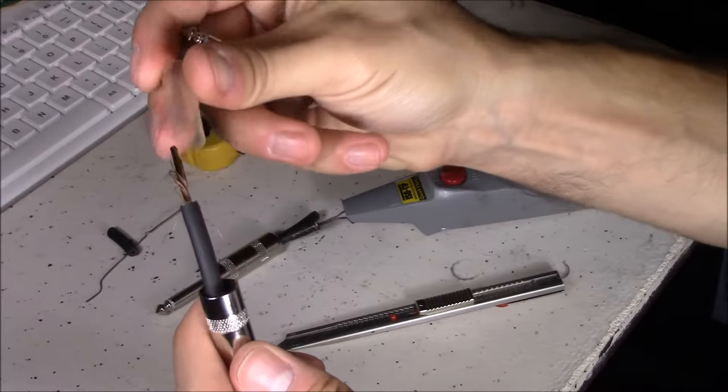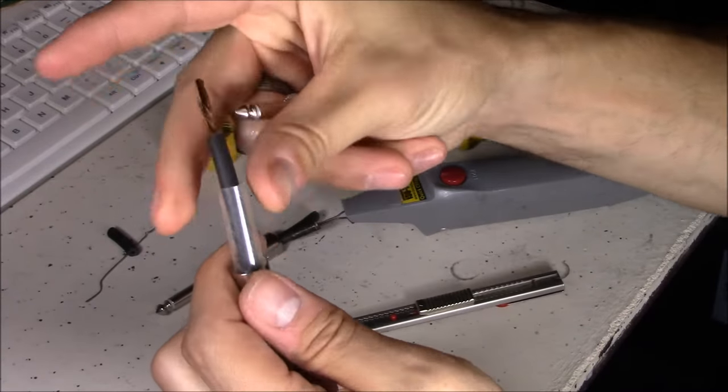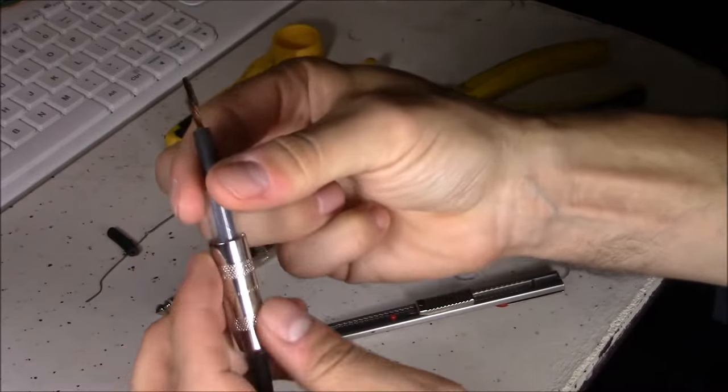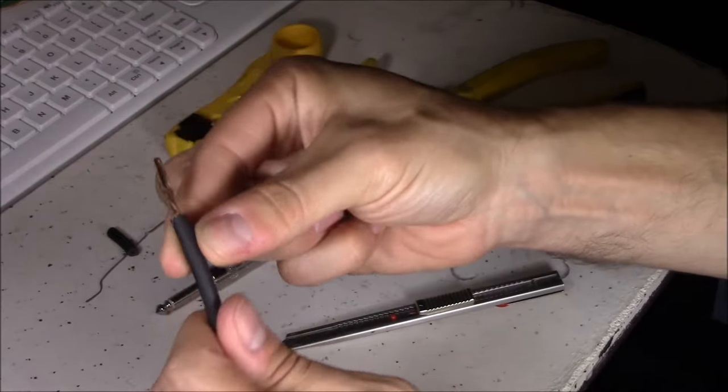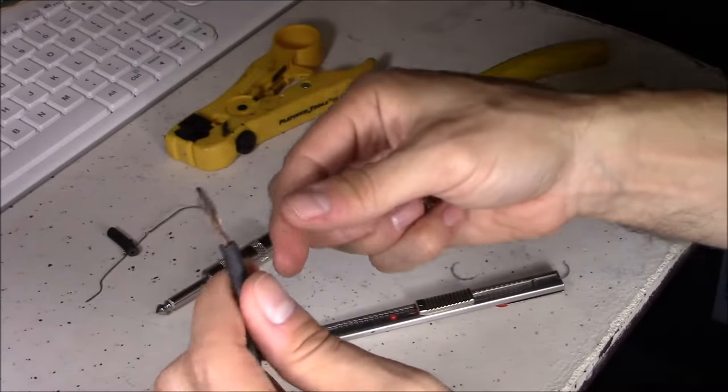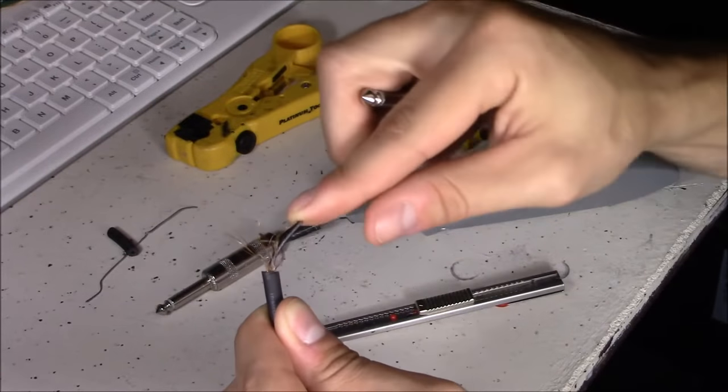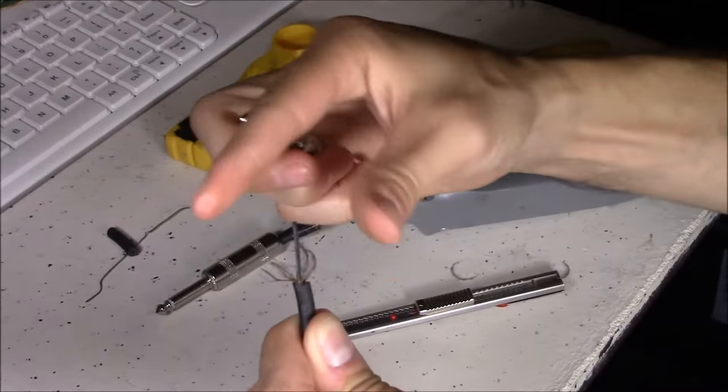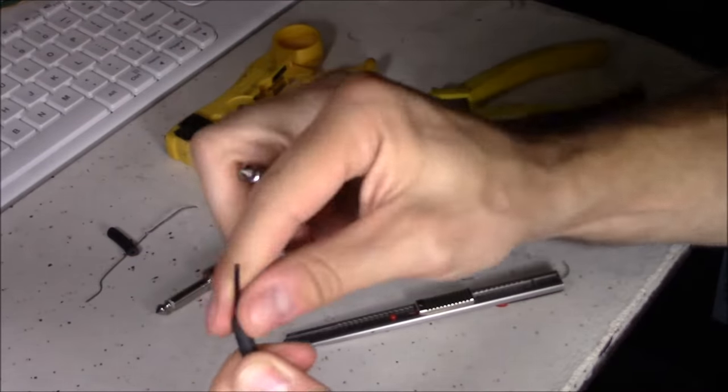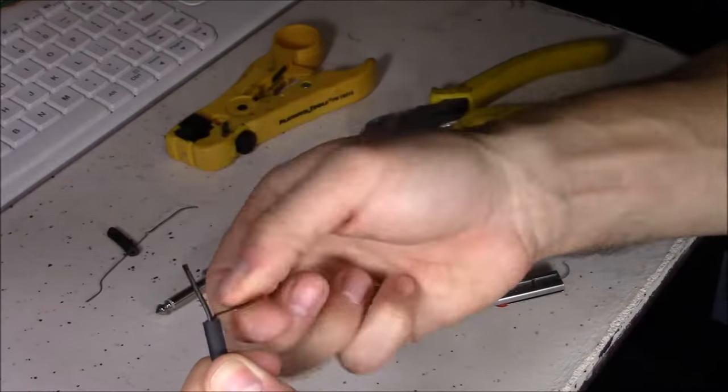And then you put the clear tube on just like that and it goes inside the metal casing. Then you take the ground wire and separate it from the center wire and then you twist it up just like that.